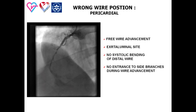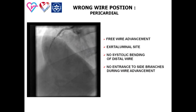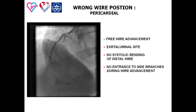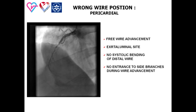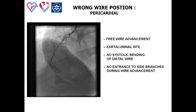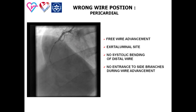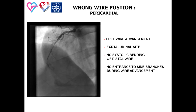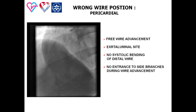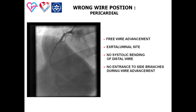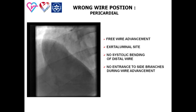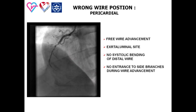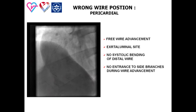Intrapericardial wire positioning suggests free wire advancement with no entrance to side branches during passing of the wire, positioning of the wire outside of the artery lumen, and/or absence of systolic bending of the tip during ventricular contraction.